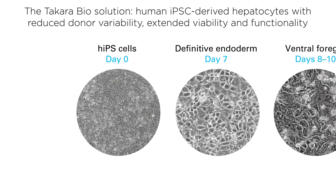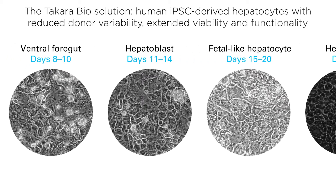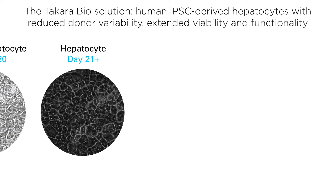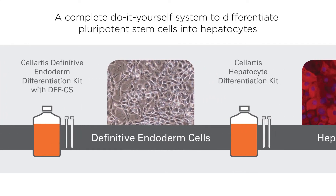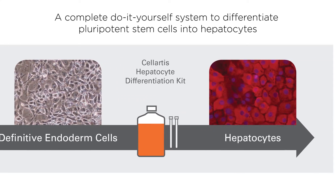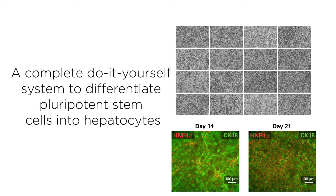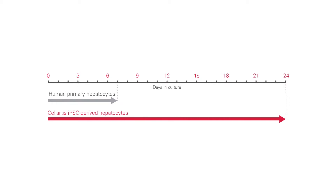At Takara Bio, we developed a hepatocyte differentiation protocol that mimics embryonic development to yield pure cells with the functionality and characteristics of mature hepatocytes. We've taken this protocol and industrialized it into a complete system that results in reproducible and reliable hepatocytes every time. Use our robust iPSC-to-hepatocyte differentiation system to generate an inexhaustible, consistent supply of mature and functional hepatocytes. These iPSC-derived hepatocytes can be cultured for up to 24 days without loss of function, giving you a three-fold larger window to work with.